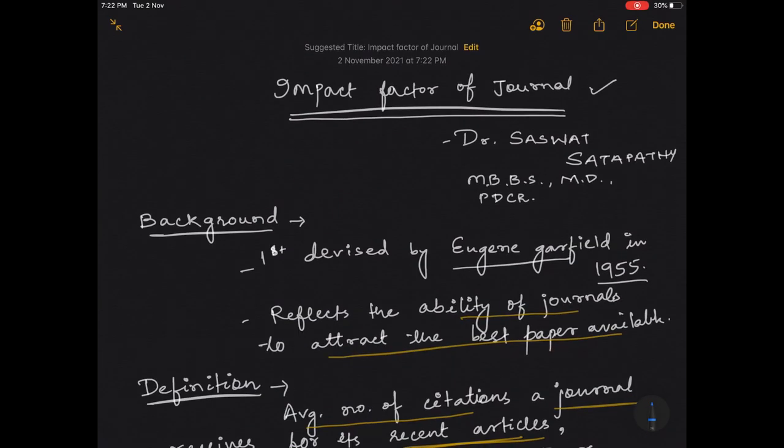So this is all about the impact factor of journal and it is very much required when you're going to publish an article. At that time, we must see that the journal in which we are publishing has to be indexed properly and has to have a good impact factor for the article to be cited. That's all, thank you.